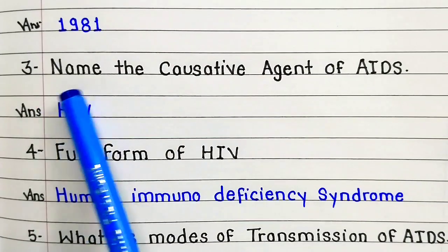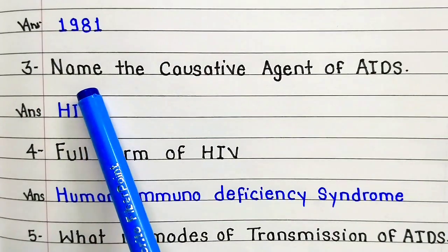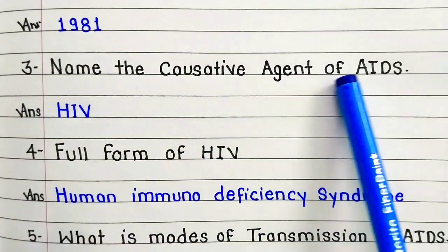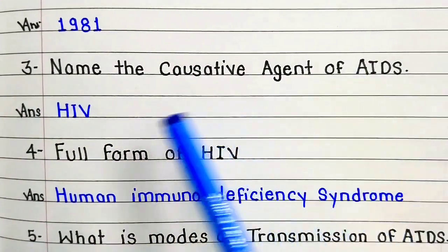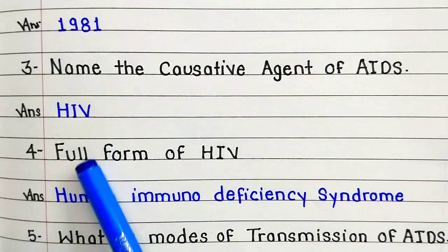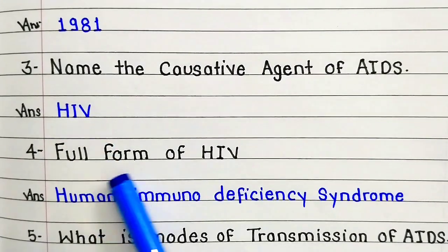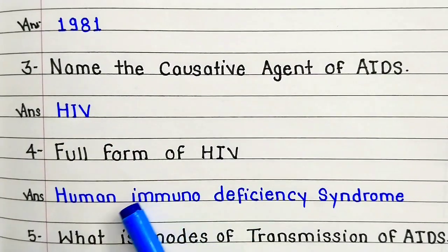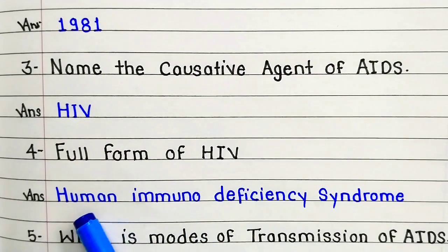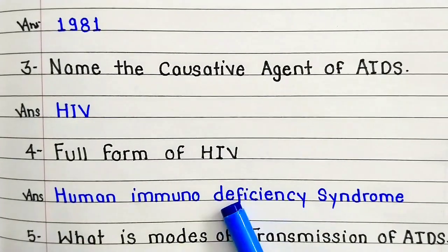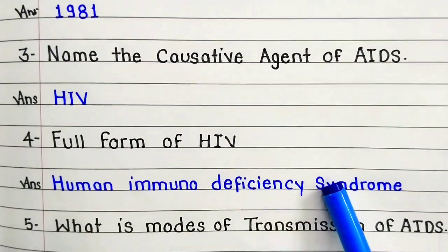Question number three: name the causative agent of AIDS. Answer: HIV. Full form of HIV: human immunodeficiency syndrome.